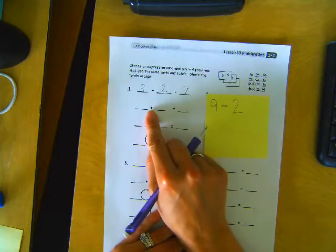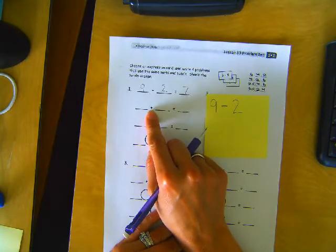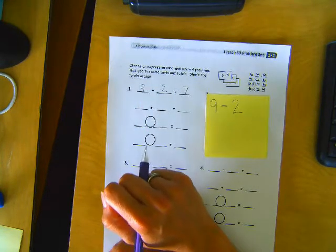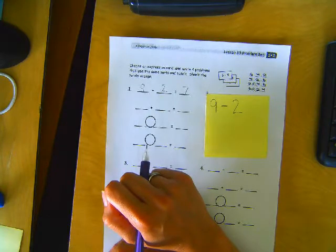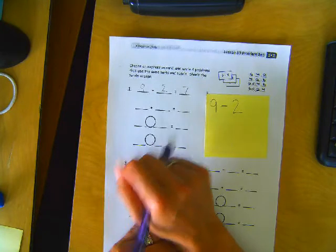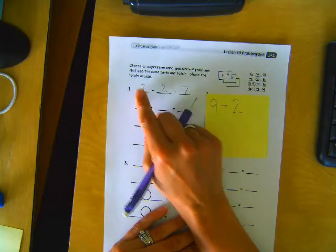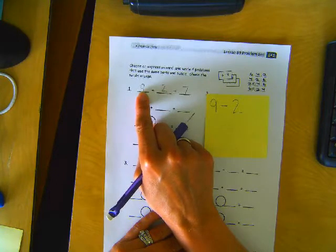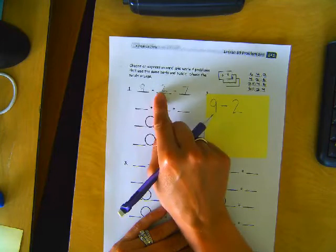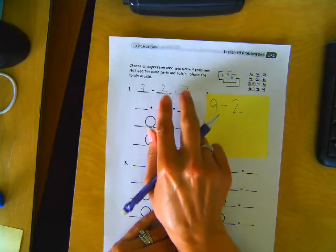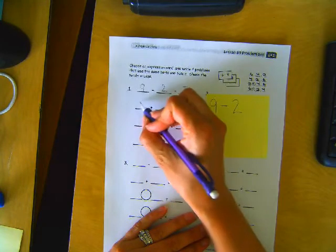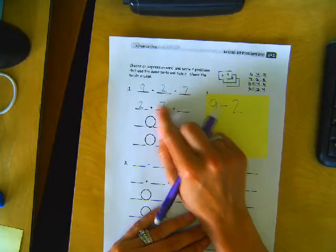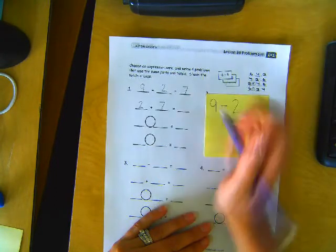Now, this is an addition number sentence. So what two numbers up here could we add together to equal the third number? Well, I don't want to add anything with 9 because 9 is the biggest number. So 9 and another number will never equal a smaller number.